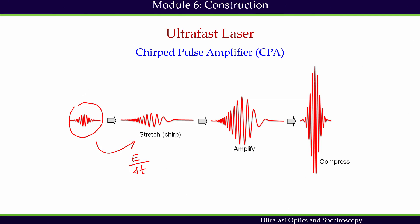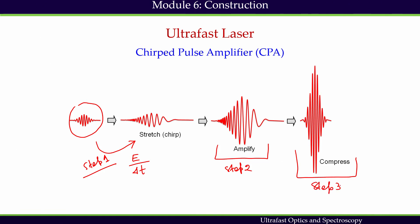So, step 1 is to stretch the pulse so that the peak intensity can be dropped. Then step 2 is to amplify the pulse, and step 3 is to recompress the pulse. This scheme is called Chirped Pulse Amplification. CPA can increase the energy of a short pulse while avoiding very high peak powers in the laser amplification process.